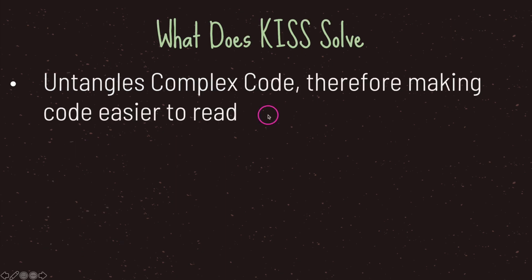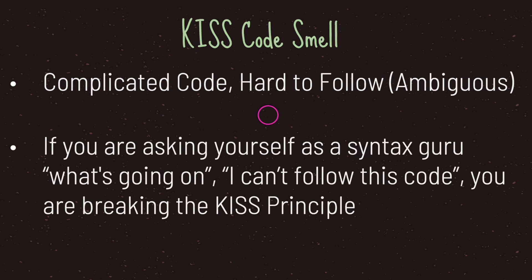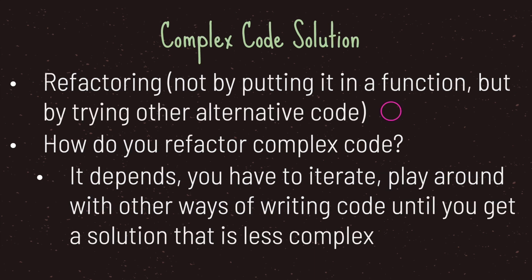What the KISS principle is trying to solve is untangling complex code, therefore making it easier to read. A common KISS code smell is when you're reading code and it's either complicated or hard to follow. If you find yourself thinking 'I can't follow this code, I'm super confused with what I'm reading,' that's a good indicator the KISS principle has been broken.